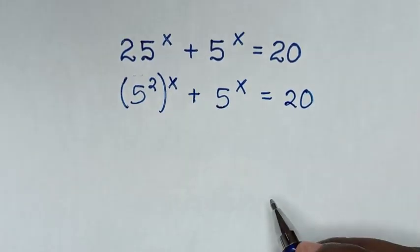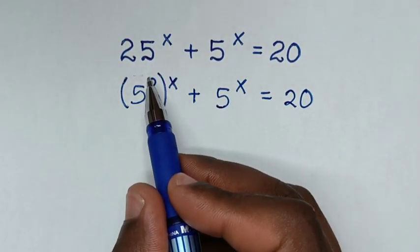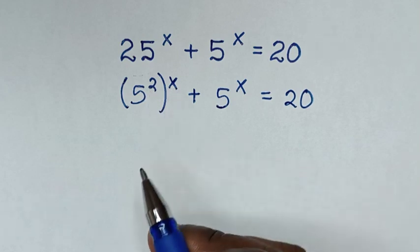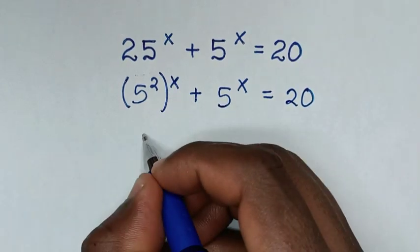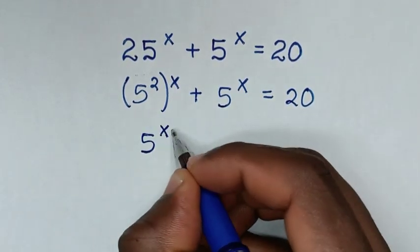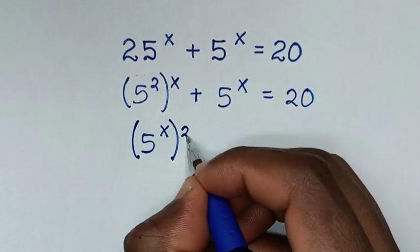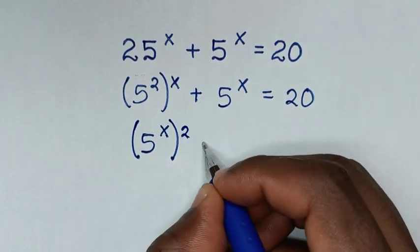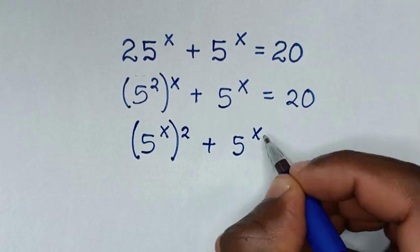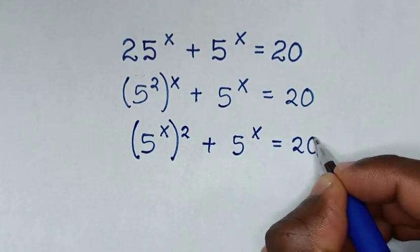In the next step, we change this power of x inside the bracket to power of 2 outside the bracket. So it will be 5 power of x inside the bracket, then power of 2 outside the bracket, plus 5 power of x is equal to 20.